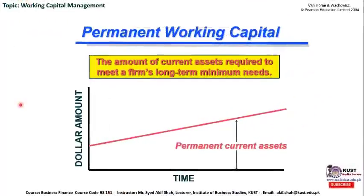The amount of current assets required to meet a firm's long-term minimum needs is known as permanent working capital or permanent current assets. Here is a diagram with the dollar amount of current assets on the vertical axis and time on the horizontal axis. When current assets are required for a longer period of time, they become permanent in nature. There could be a higher level of current assets required at any specific period of time.